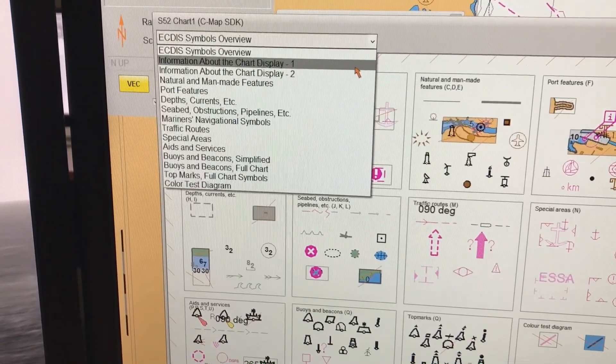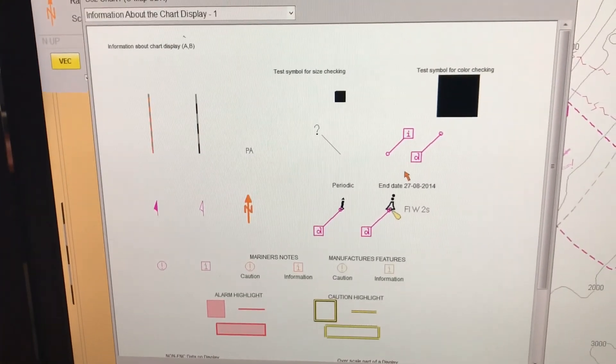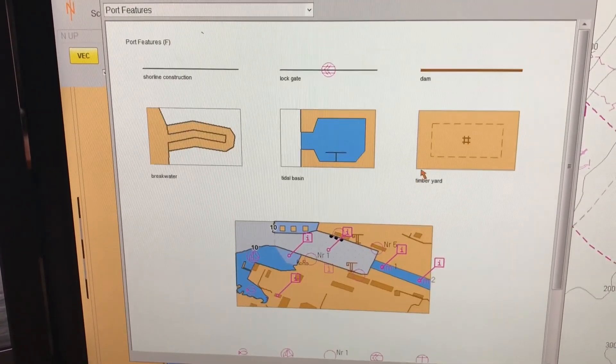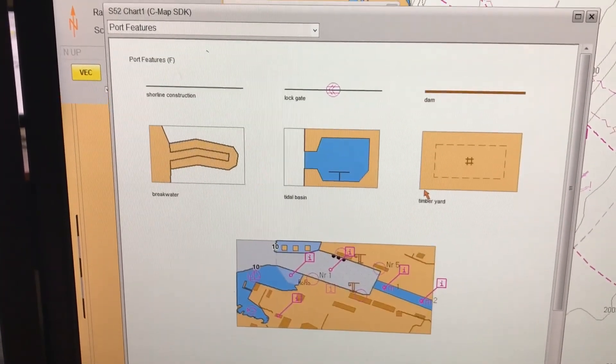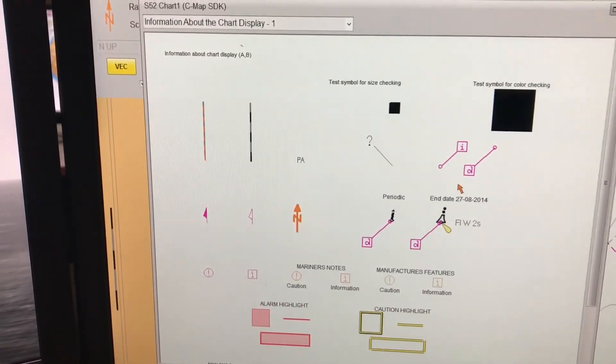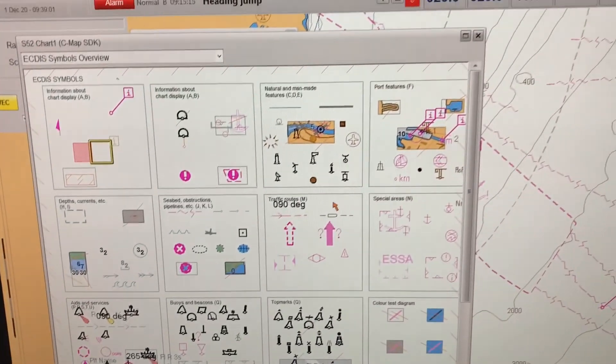ECDIS symbols overview and you can find all the symbols that you need for chart correction, whether it's buoys, information, natural man-made features, ports, seabed, obstructions, pipelines, depth features, anything that you need for chart correction, it's available here. There you go.